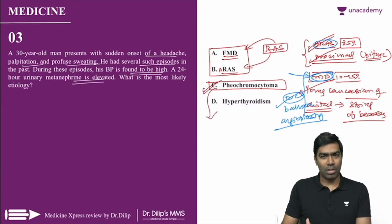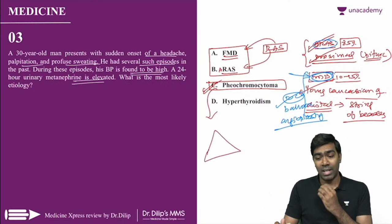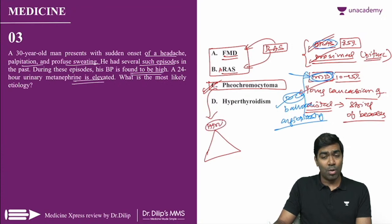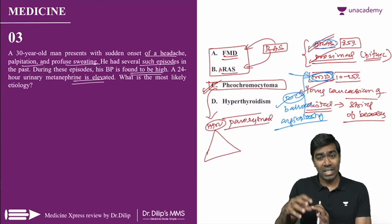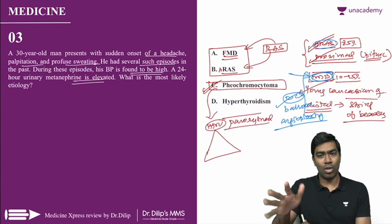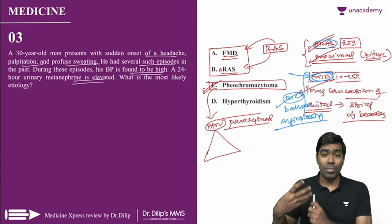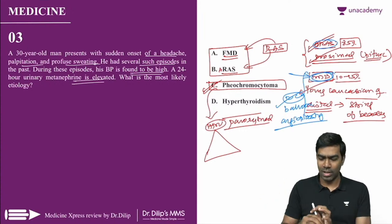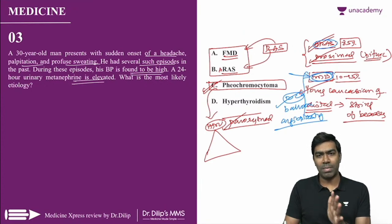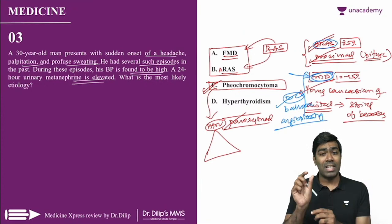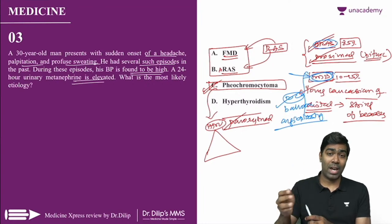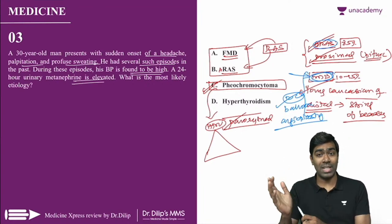Treatment of pheochromocytoma: the drug of choice for acute pheochromocytoma crisis is phenoxybenzamine (alpha blocker). Never give beta blockers alone — this causes unopposed alpha action and further BP elevation. Always give alpha blocker first, then after 24–48 hours add a beta blocker. Surgery is the ultimate definitive treatment.